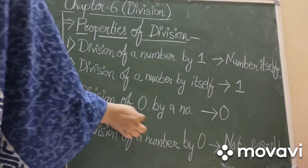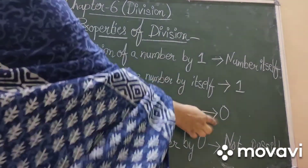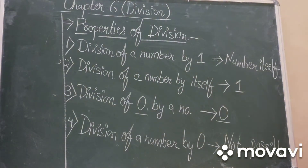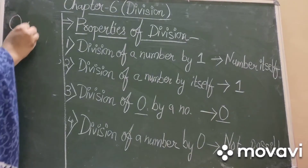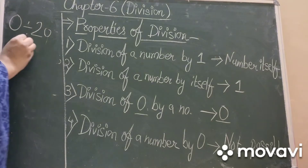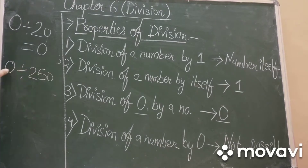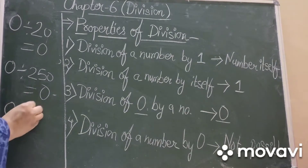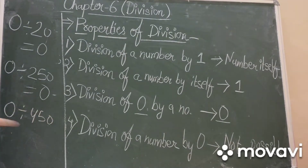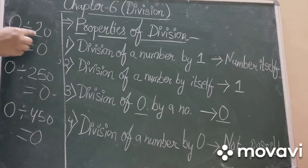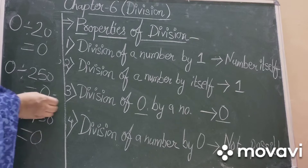Third property: division of zero by a number always gives you zero. For example, zero divided by twenty is zero. Zero divided by 250 is zero. Zero divided by 450 is also zero. Aap kabhi bhi kisi bhi number ko zero se divide karenge, to aapko answer milega always zero.